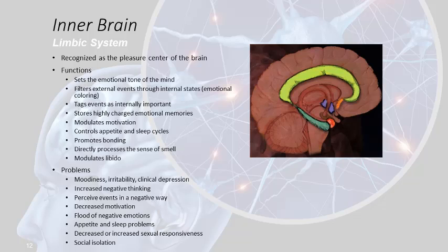Malfunctions of the limbic system manifest as moodiness, irritability, clinical depression, increased negative thinking, perceiving events in a negative way, increased or decreased motivation, negative emotions, manic emotions, appetite problems, sleep problems, decreased sexual responsiveness, social isolation, bipolar, and schiziform disorders. All of these things fall in here. And you will find that people who are drug abusers act more like people who are mentally ill — they act more on the basis of what's occurring in their limbic system, and they're unable to control that behavior by using the frontal parts of the brain.